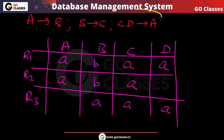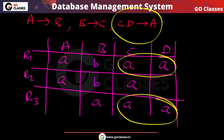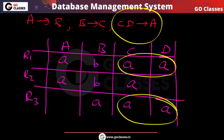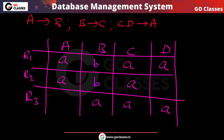Now applying the dependency CD determines A. In two rows, the CD values are the same, so the A values in those rows must also agree. Applying this rule, we update the A values in those two rows to match.